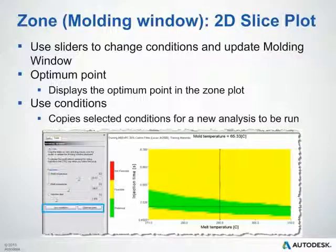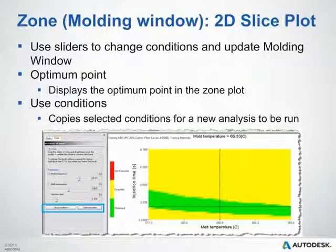If you want to see what your optimum conditions will give you in the way of a processing window, just click the button that says Optimum Point, and it will automatically update your mold, melt, and injection times to reflect what we determined would be the optimum points. From there, you can investigate further. If you decide to use the conditions, click the button that says Use Conditions, and that will copy the selected conditions into a new analysis so you can start running your fill analysis right from there.